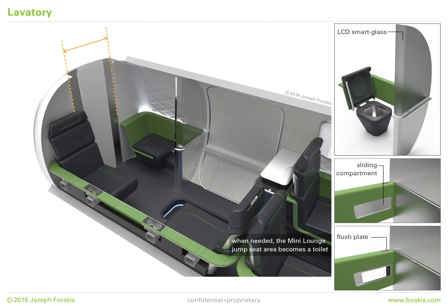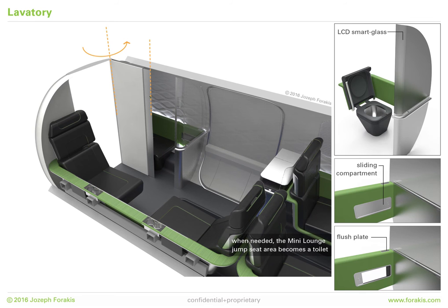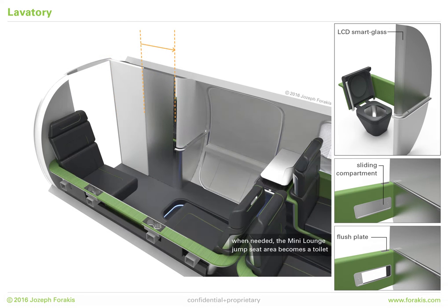Lavatory. When needed, the mini lounge jump seat flips up to reveal a hidden toilet. The double-action cockpit door rotates and slides to close against the frame of the glass divider panel. Once the bathroom door is locked, the transparent panel becomes opaque utilizing LCD smart glass technology.